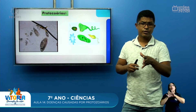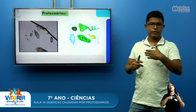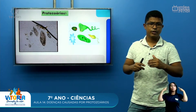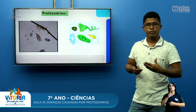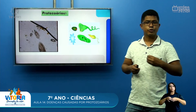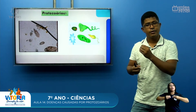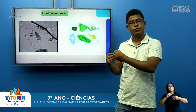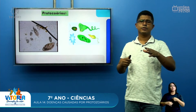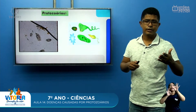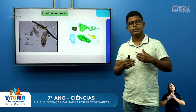Esses animais ruminantes, como a vaca, o bode e a ovelha, têm dentro de um compartimento chamado rúmen dezenas de tipos de protozoários diferentes que auxiliam a digestão da celulose, a quebrar o capim e o açúcar do capim para produzir energia para o animal. Também existem insetos muito pequenos, como os cupins, que têm no seu trato digestivo protozoários que ajudam na digestão da celulose.